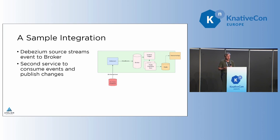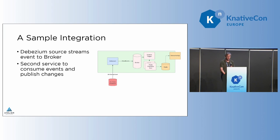For the sample integration, which I have as part of a GitHub repo, it's pretty much an on-prem database into a Debezium service, which spits things out to a broker, which leverages Knative's trigger and a Knative service to massage that data, dump it into Redis, where I have another Kubernetes service listening on the back end to report the results. In this case, it's more of a project voting system.